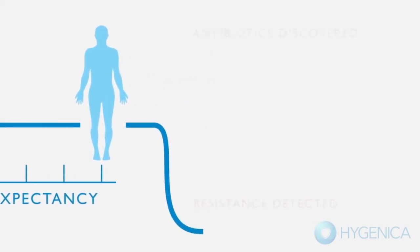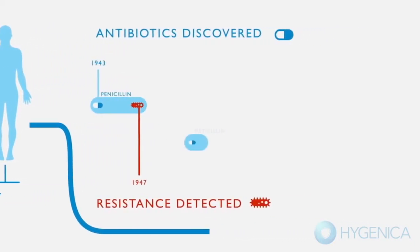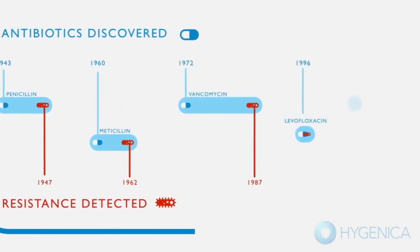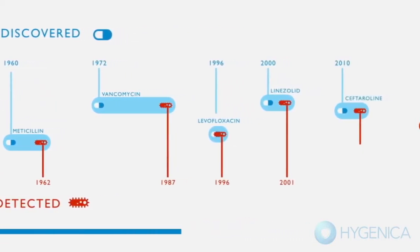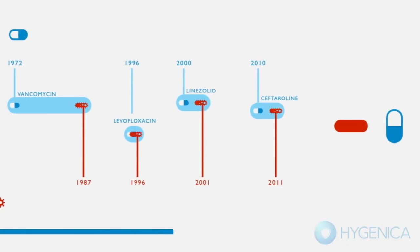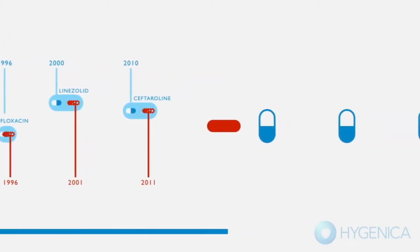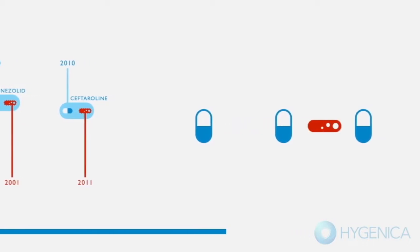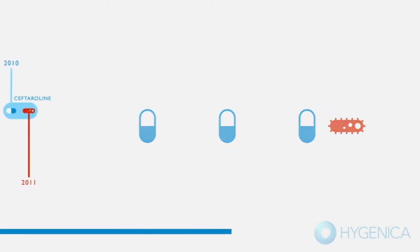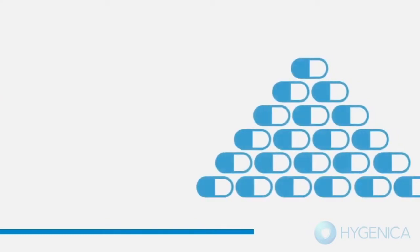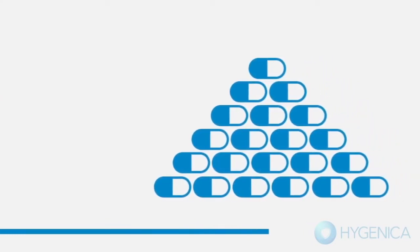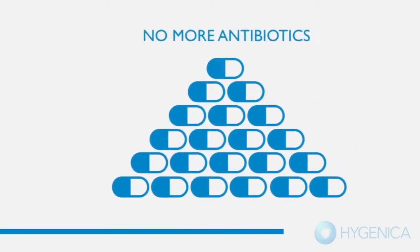Soon after the release of new antibiotic treatments, bacteria started fighting back by developing resistance to them in an evolutionary arms race for survival. The uncomfortable truth is that bacteria develop resistance faster than we can discover the new antibiotics that are urgently needed to combat them. A completely new class of antibiotic hasn't been discovered since 1987.